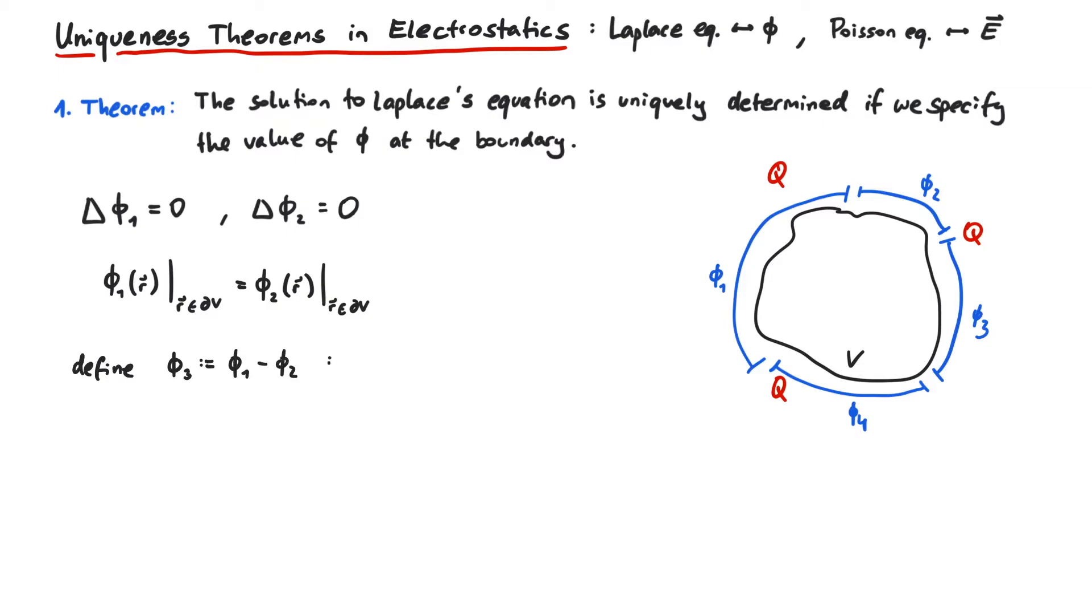Therefore also phi3 fulfills the Laplace equation simply because phi1 and phi2 fulfill it separately. Here comes the important point. Since phi1 and phi2 obey the same boundary conditions, phi3 at the boundary is zero everywhere.